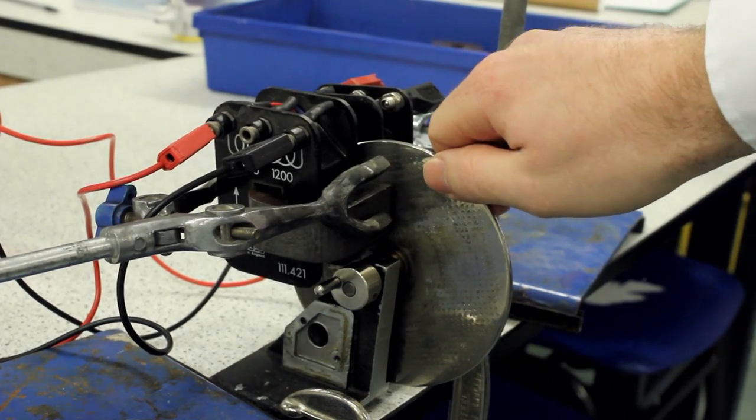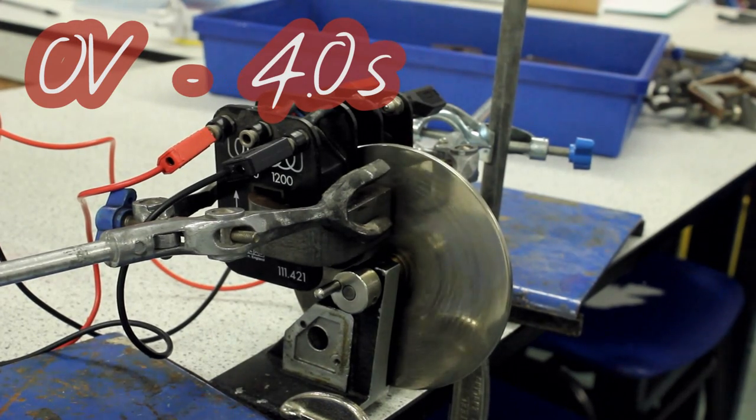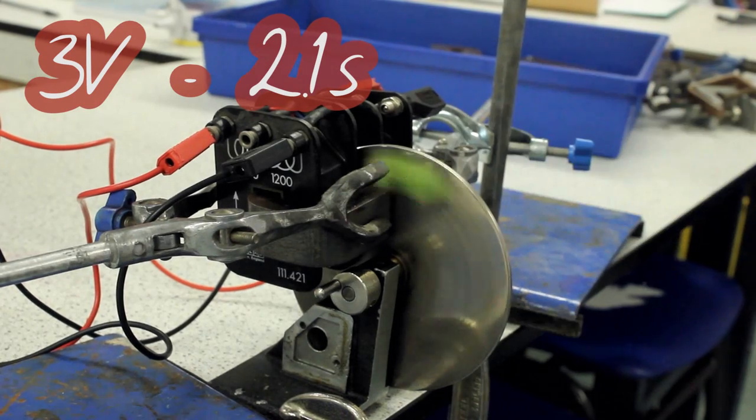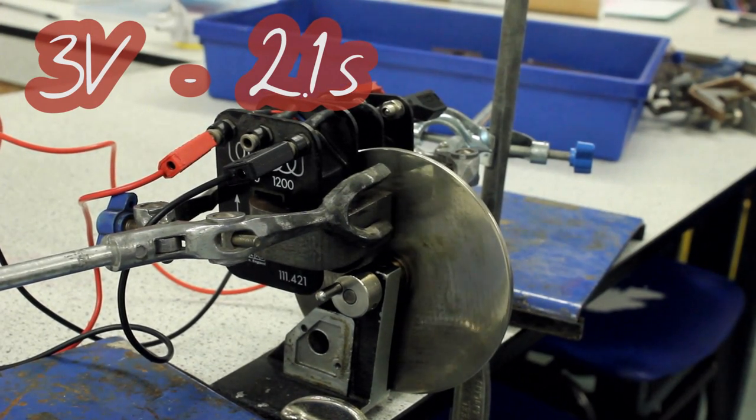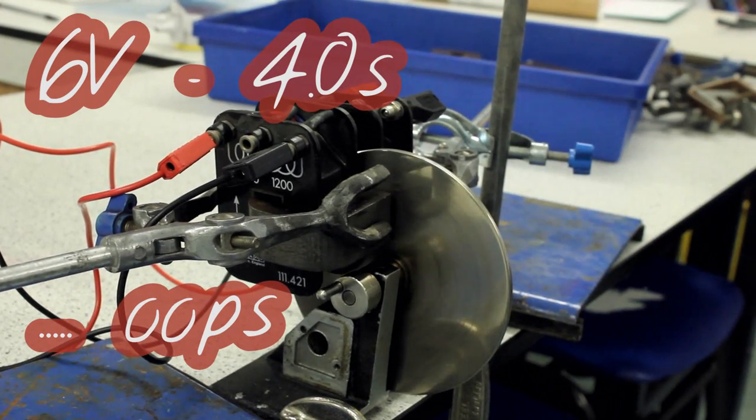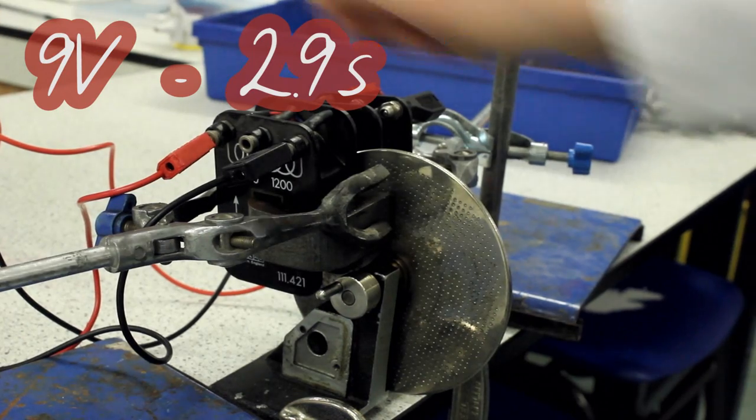This is with no current going through the coils, this is 3 volts, 6 volts, 9 volts.